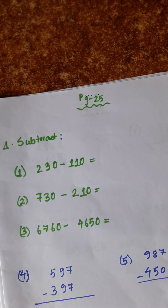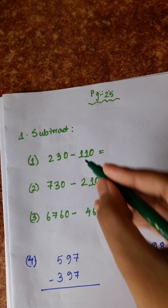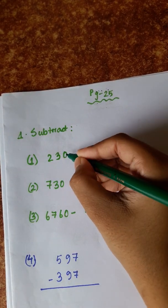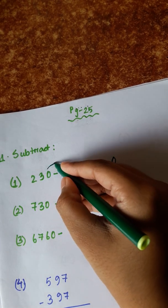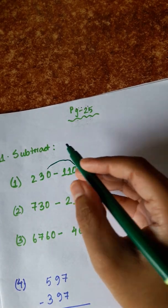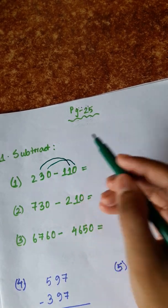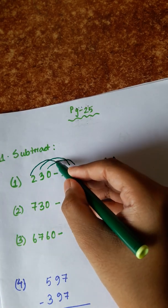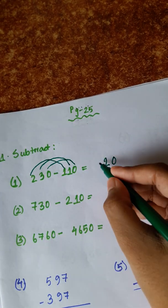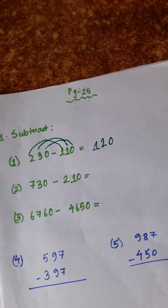230 minus 110: 0 minus 0 is 0. 3 minus 1 is 2. 2 minus 1 is 1. Answer: 120.